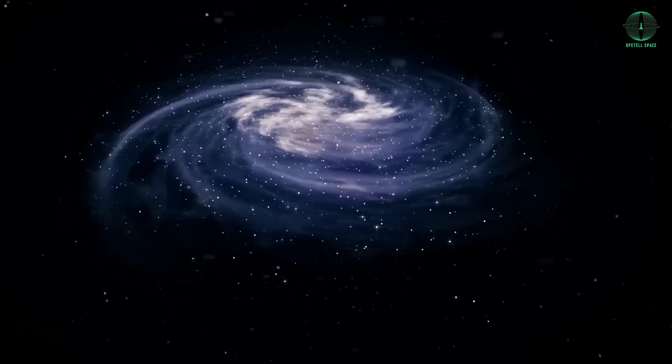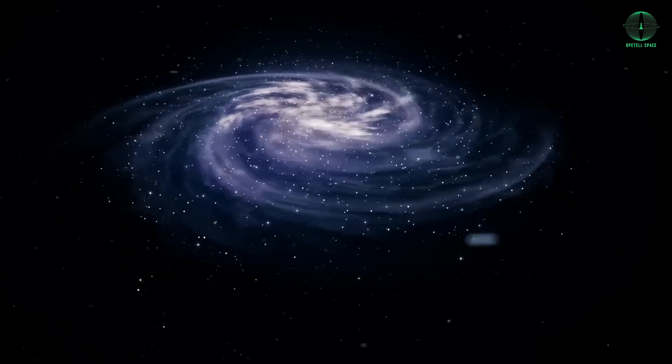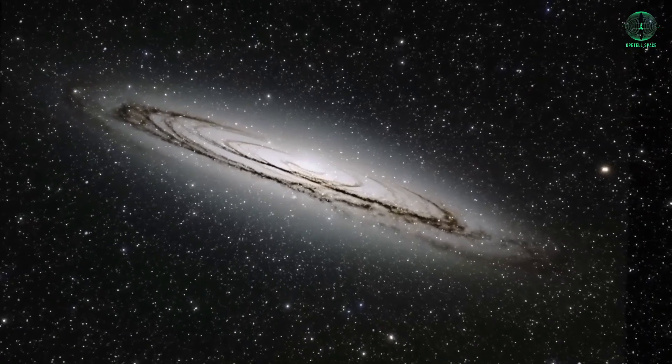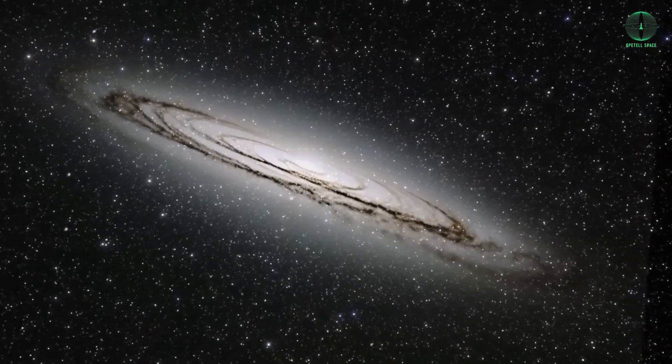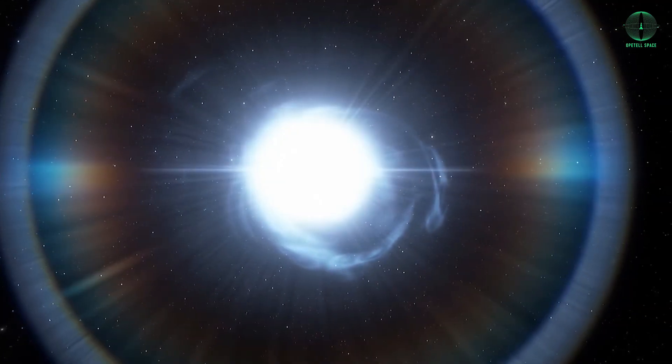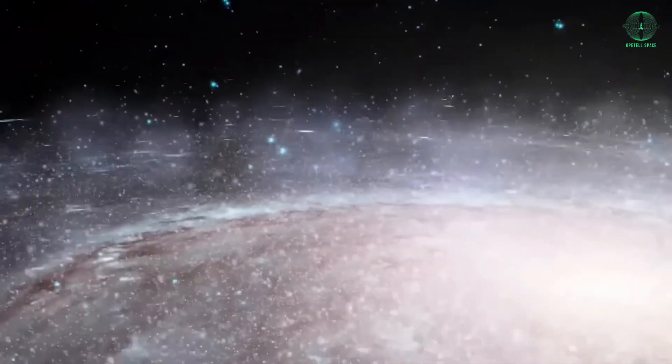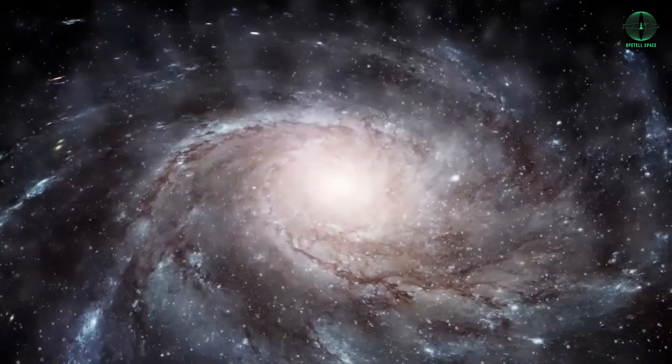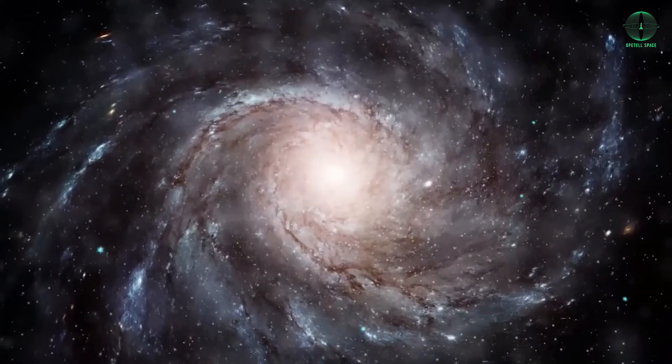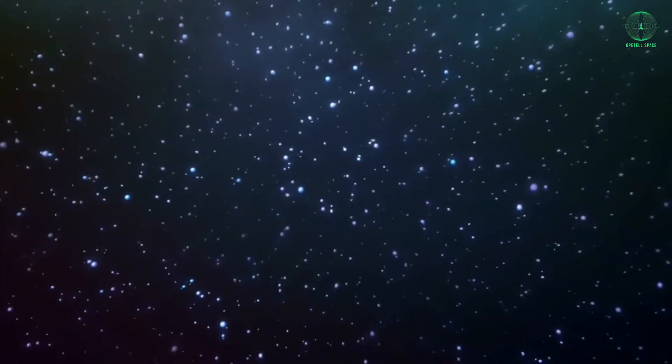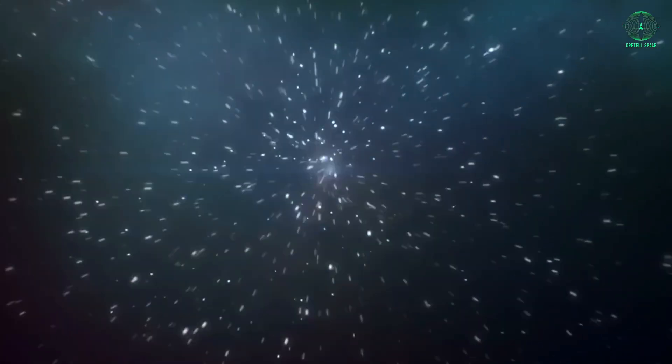So what existed before the Big Bang? According to the vacuum fluctuation model, it could have been a quantum vacuum, a collection of transient particles and antiparticles. Our universe might have been just one chance bubble that grew into something more significant. While the vacuum fluctuation model poses intriguing possibilities, it also presents challenging questions. For instance, why did a specific bubble expand while others didn't? And how do we reconcile the concept of an eternal quantum vacuum with the observable age of our universe?